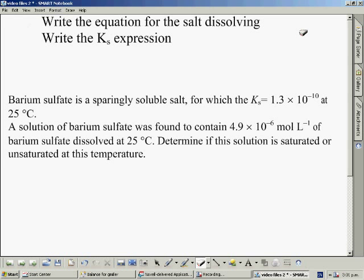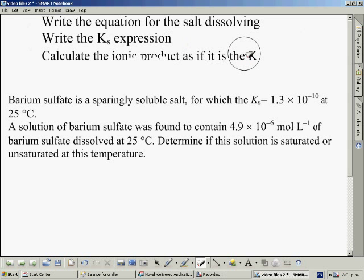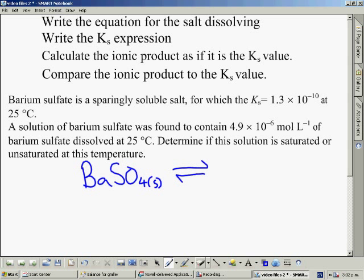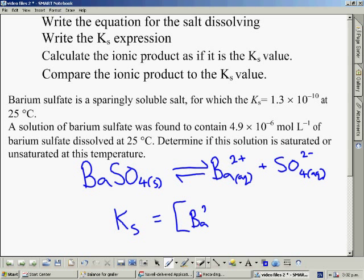What we're going to do here is write an equation for the salt dissolving in the first place. We can then write the KS expression that comes out of that. Once we've got the KS expression, we can calculate the ionic product value as if it is the KS value itself, then we compare the ionic product value to the KS value and see which one is highest.